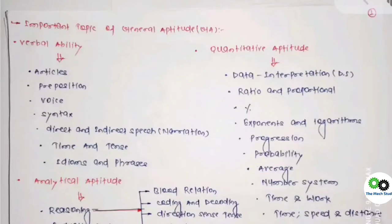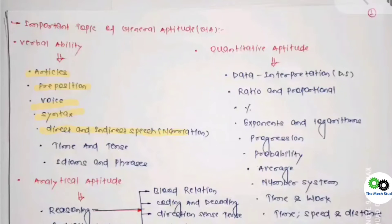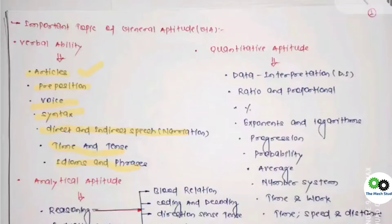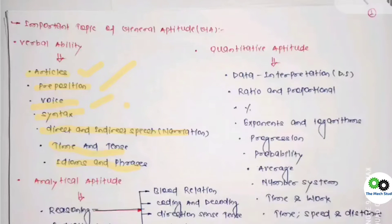Going ahead with the first General Aptitude topic — Verbal Ability. You need to study at least: articles, prepositions, voice, syntax, direct and indirect speech (narration), tenses, and idioms and phrases. At least revise the basic concepts and solve previous year questions. Most of the questions are coming from articles, voice, syntax, and direct and indirect speech, with a few questions also from idioms, phrases, and tenses.